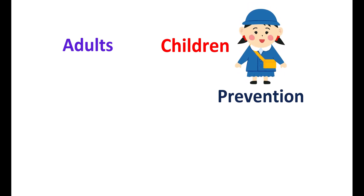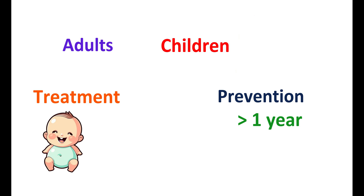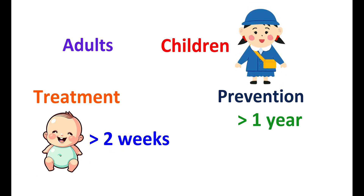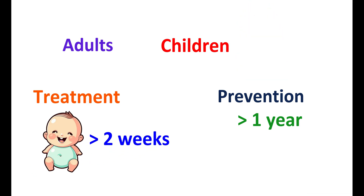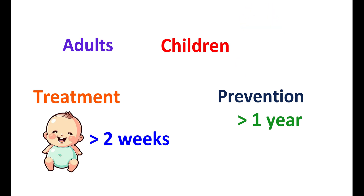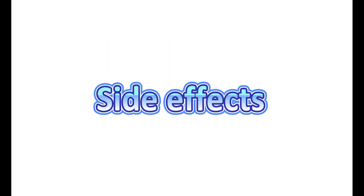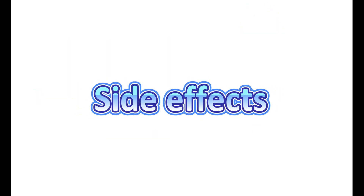For prevention of flu virus, oseltamivir can be given to children above one year of age. Below one year, it is not safe and should not be used for prophylaxis. However, for treatment of flu viral infection, it can be given to infants above two weeks of age. Use of this medication for extended periods is not safe in children less than one year. For both treatment and prophylaxis, oseltamivir should be given within 48 hours of onset of symptoms.